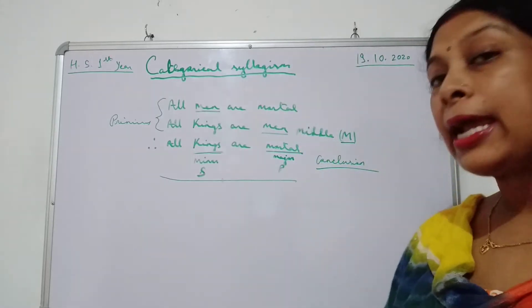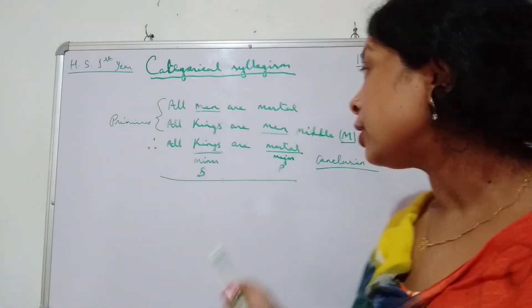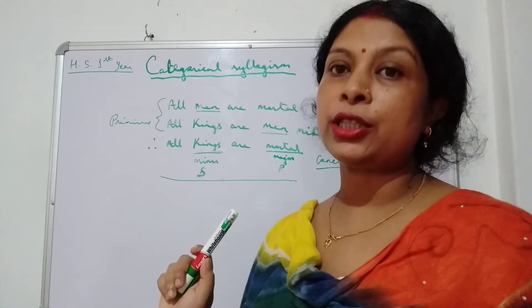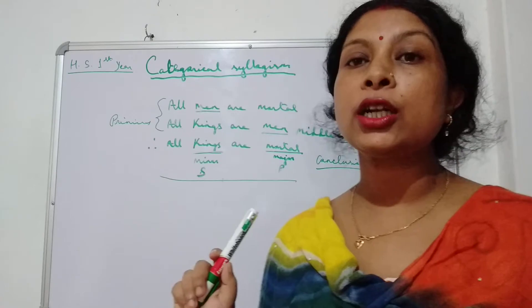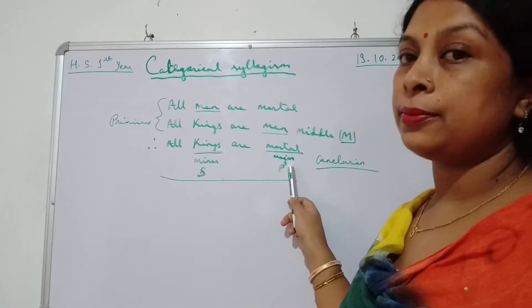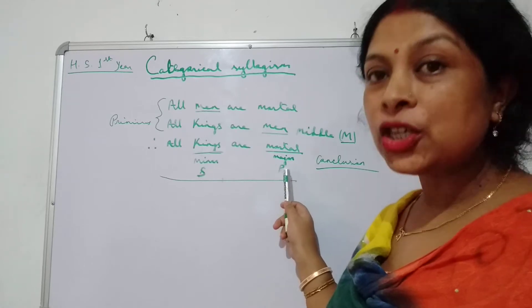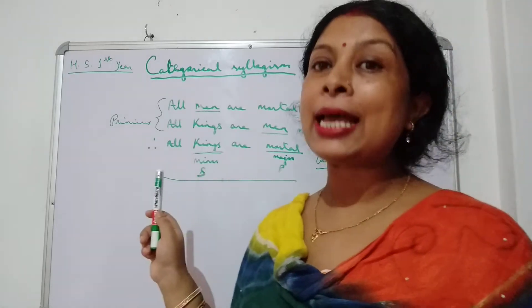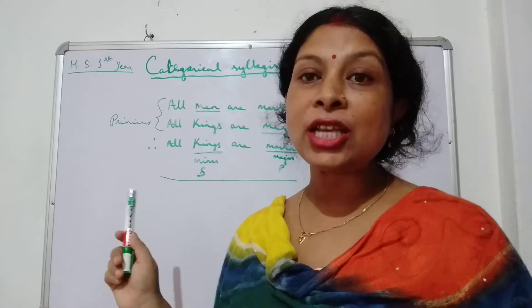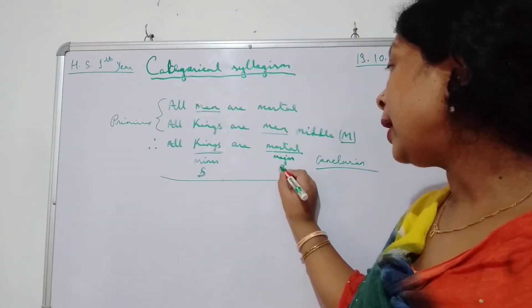Now the predicate of the conclusion — which one is the predicate of the conclusion? 'Mortal' is the predicate of the conclusion. The predicate of the conclusion is known as major term, and the symbol that represents the major term is P.